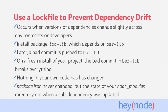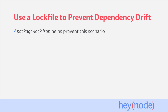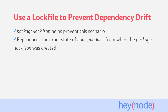Now you're getting an error, and so far as you can tell, you haven't changed anything at all. This is the exact sort of scenario that package-lock.json can help you avoid. If your project had a package-lock.json file, then npm install would have reproduced the exact state of your node_modules directory from when the package-lock was created. In this scenario, the buggy version of bar-lib would never have been installed.